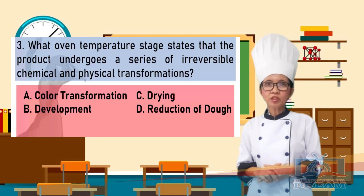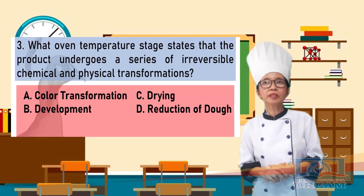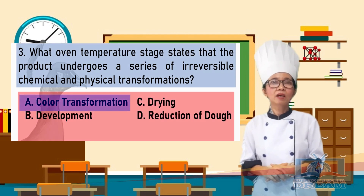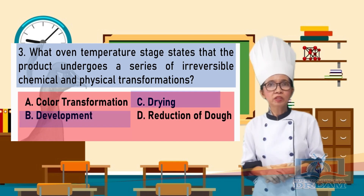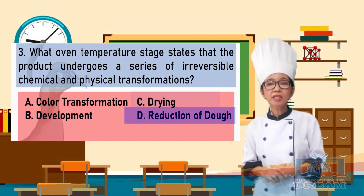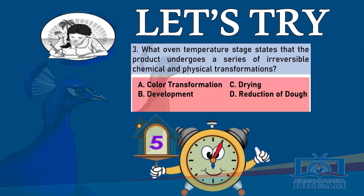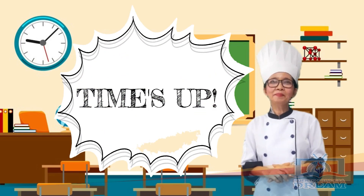What oven temperature stage states that the product undergoes a series of irreversible chemical and physical transformations? A. Color transformation, B. Development, C. Drying, D. Reduction of dough. Time is up!